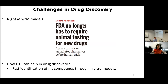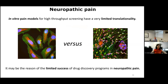We are now at the crossroads in the field of drug discovery with a need to choose novel in vitro models, since the FDA does not require animal assays for the approval of some new drugs. It is especially important in the field of neuropathic pain because in vitro modulation and high-throughput screening has very limited translationality. Immortalized cells are quite different from neurons that form peripheral nerves. This may be the reason for the limited success of drug discovery programs in neuropathic pain.